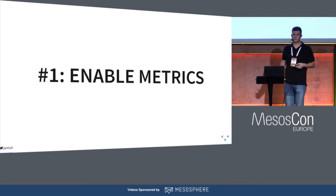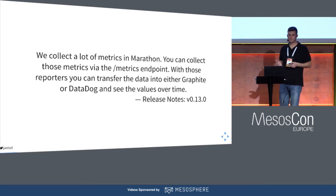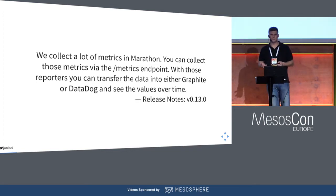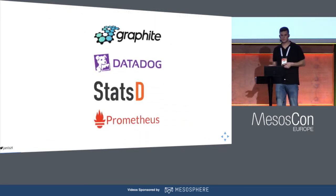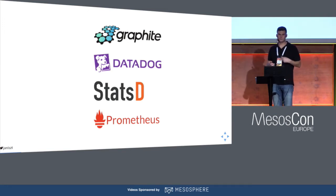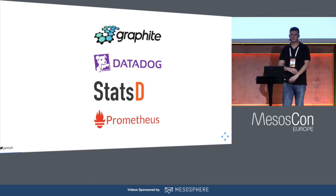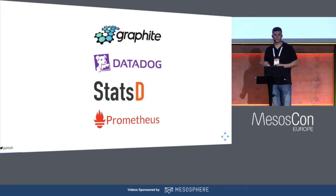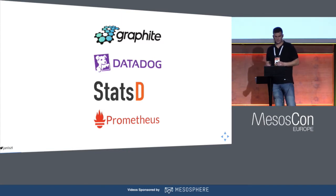In Marathon, metrics are not enabled by default because Marathon doesn't know where you want to store those metrics. Metrics appeared in Marathon in early version 0.13 and from the beginning it started to support all major players in the market. This means they support Graphite, Datadog, StatsD, and there's also a port to support Prometheus. There is a GitHub repo with a Prometheus adapter because Marathon exposes metrics in a JSON format and Prometheus needs a different schema to read the metrics.